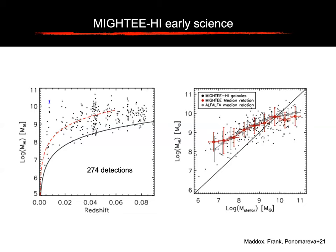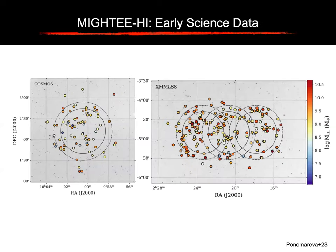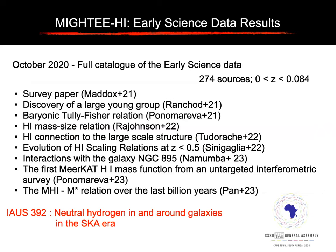It is the first time an interferometer has been able to observe a completely unbiased blank field up to this redshift, because before this, surveys were pointed to a cluster, or to a specific group or specific environment. So this is the first time we sample whatever is coming our way — it's a completely blind survey. Our detections follow the expected MH1–M-star relation, which was important for us to understand since it was a new instrument and calibration really needed a lot of attention. A lot of this science has been led by early career researchers and early career South African researchers.